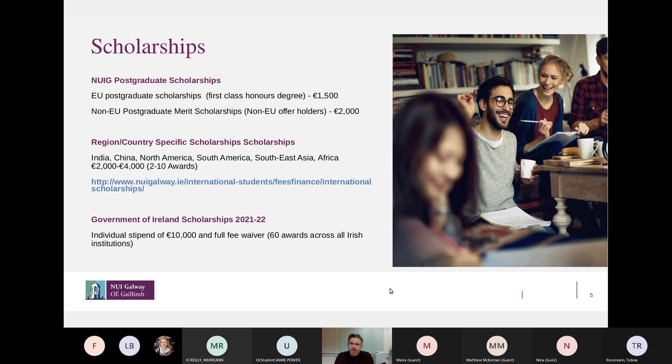Lastly, just in terms of scholarships, there's a number of different scholarships available. Some of these are directed for EU students. So there's the NUIG postgraduate scholarships for EU students, which if you have a first class honours undergraduate degree, it gets you €1500 either in fee reduction or if you're on a SUSE grant is essentially given to you. And for non-EU students, similarly, there's a €2000 postgraduate merit scholarship.